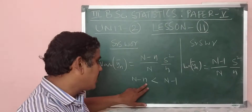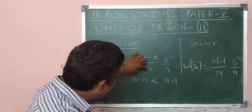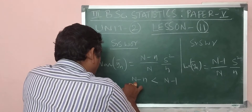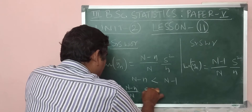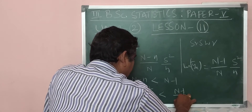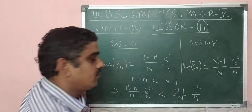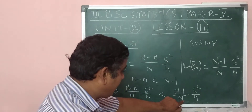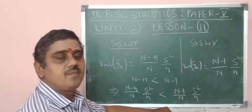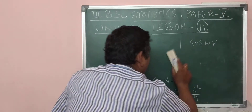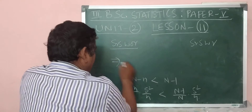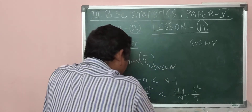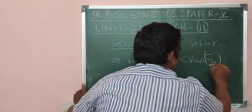Therefore, multiplying both sides by S-squared over n, we get: (N minus n) divided by N, times S-squared over n, is less than (N minus 1) divided by N, times S-squared over n. This implies that the variance of Y-bar under SRSWOR is less than the variance of Y-bar under SRSWR.